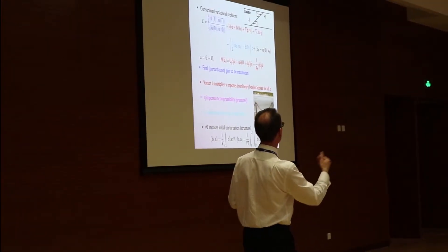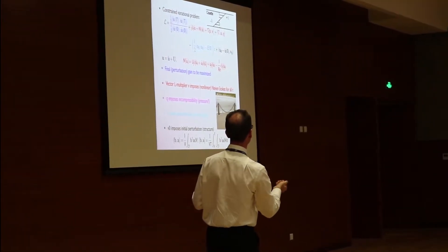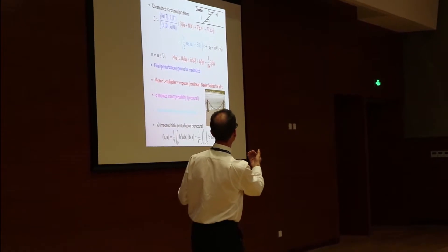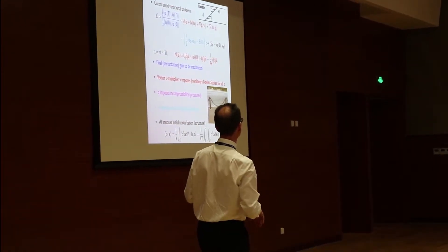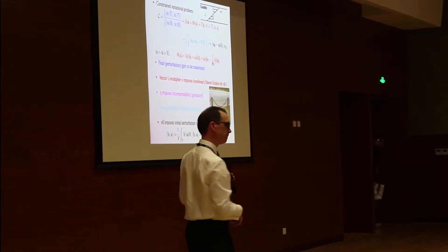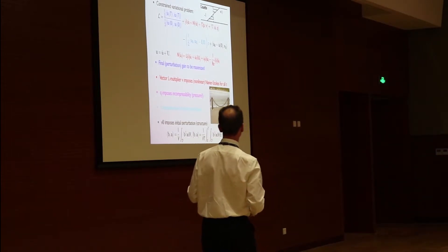So to impose the constraints at every point in space and time that I satisfy the Navier-Stokes equations, I multiply by this vector, Lagrange multiplier v, the adjoint variable.